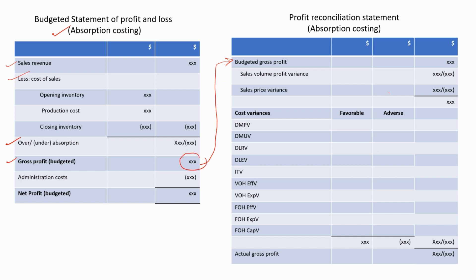We enter this budgeted gross profit value as the starting point. Then we have to adjust this value for sales variances. There are two sales variances: sales volume profit variance and sales price variance. If the variances are favorable, we add this value to the gross profit amount. If the variances are adverse, we deduct these values from the gross profit amount. So we can arrive at the adjusted gross profit amount.